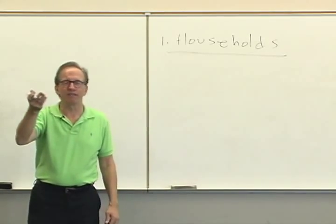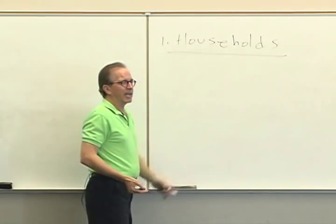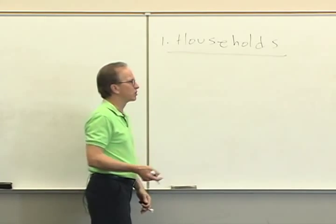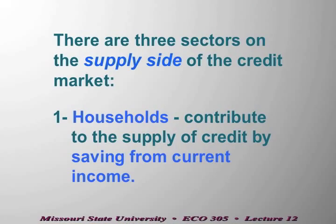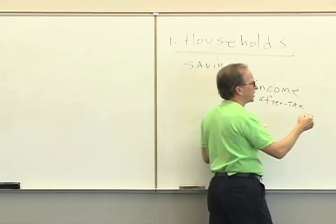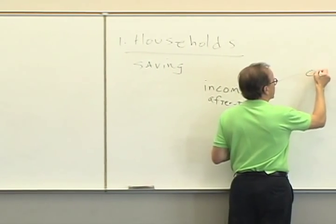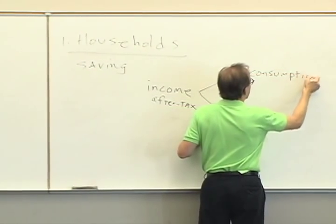The household sector is just people living in households either by themselves or with other people — very often these are families. The contribution the household sector makes to the supply of credit is through saving. Everybody's heard about saving: putting your money away today to spend it on a later day. In order to understand the way people save, let's talk about their behavior in terms of their income — their after-tax income, sometimes called disposable income. There are two things to do with income after paying taxes: one is we spend it, called consumption spending, and the other is saving.